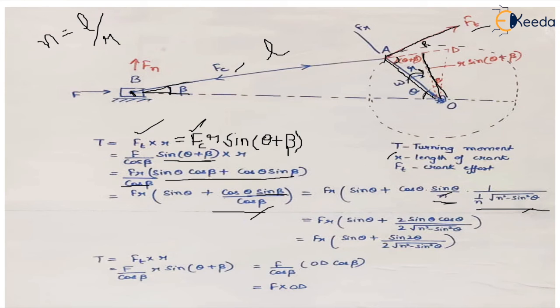The n cancels out and we are left with this value. We multiply numerator and denominator by 2. So 2 sin θ cos θ becomes sin 2θ, and the denominator is 2√(n² - sin² θ). This is the value of the turning moment of the crankshaft.